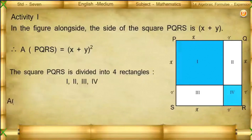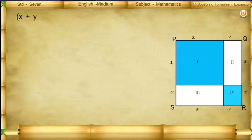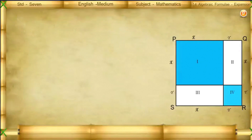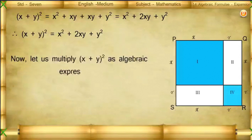The area of PQRS is equal to the sum of areas of rectangles 1, 2, 3, and 4. Therefore, (x + y)² = x² + xy + xy + y² = x² + 2xy + y². So, (x + y) whole square is equal to x² + 2xy + y². Now let us multiply (x + y) whole square as algebraic expressions.